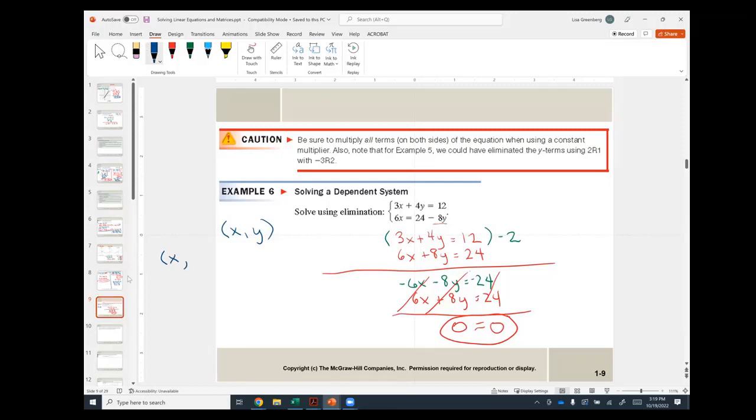And then I can solve y in terms of x. Let's just start off with 3x plus 4y equals 12. And I'm going to subtract 3x from both sides. I'm going to divide both sides by 4. And I get y equals minus 3 fourths x plus 3.